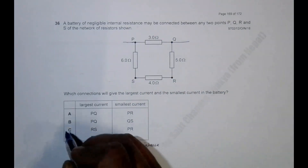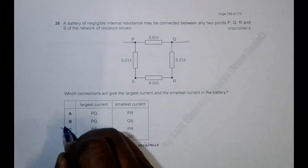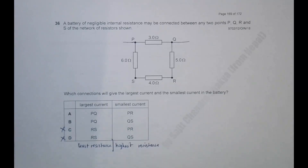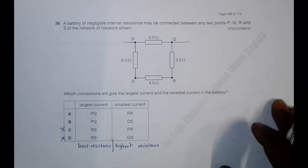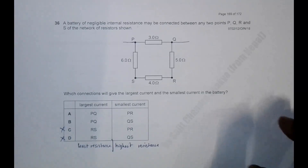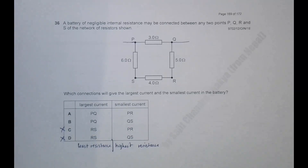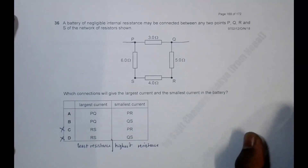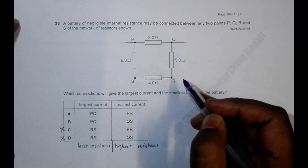This means choices A and B qualify, while choices C and D are disqualified. Now we need to find which connection gives the largest resistance, which will correspond to the smallest current.